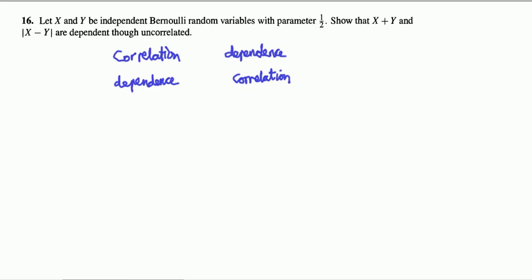Hey, hi everyone. Today I've got a good question for you to practice constructing the joint and marginal probability mass functions and computing the covariance of a pair of random variables.